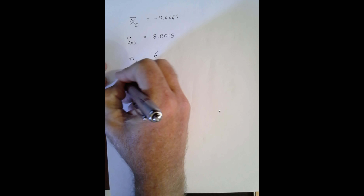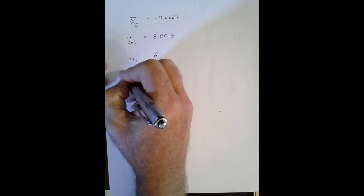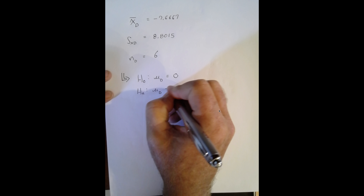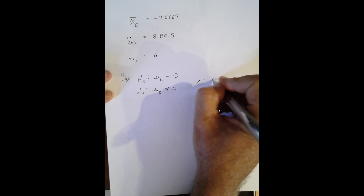All tests of hypotheses start with the null and alternative hypotheses. In this case, the null is mu sub d equals zero — not mu one minus mu two, because our focus is on one variable: the difference. Our alternative hypothesis is mu sub d not equal to zero. We'll test at alpha equal to 0.05.